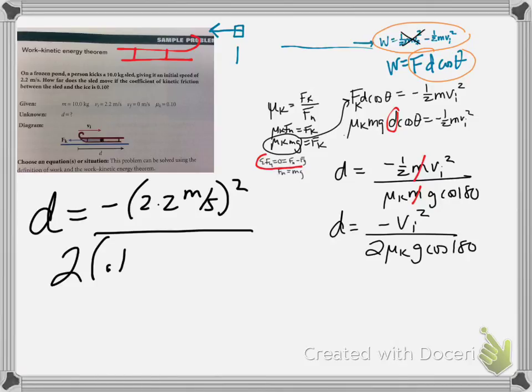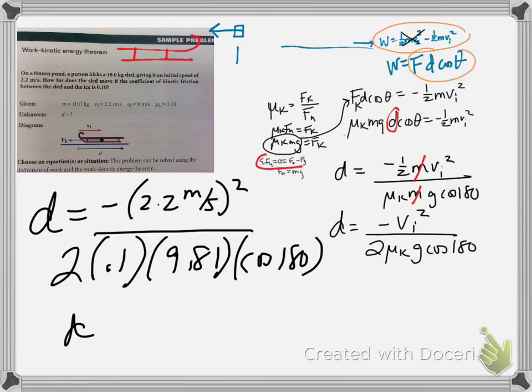Times 2 times 0.1 gesundheit times 9.81 times cosine of 180. Be careful with a couple things here. So be careful with your signs. That is the negative of 2.2 squared, not negative 2.2 squared. You just had that conversation. I thought so. And we've got that cosine 180 on the bottom, so we're going to have a negative number divided by a negative number. Our distance is going to be positive.